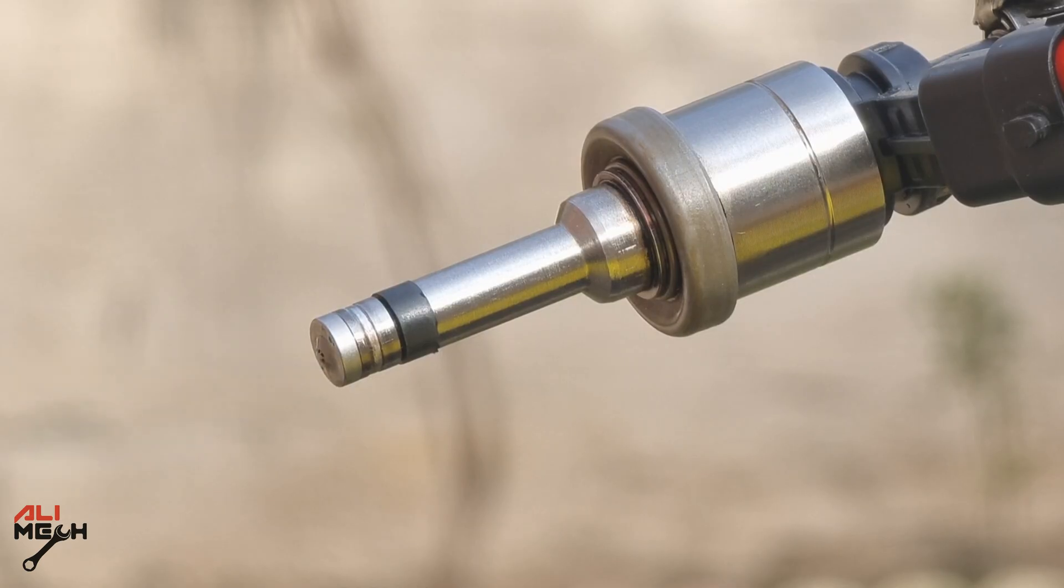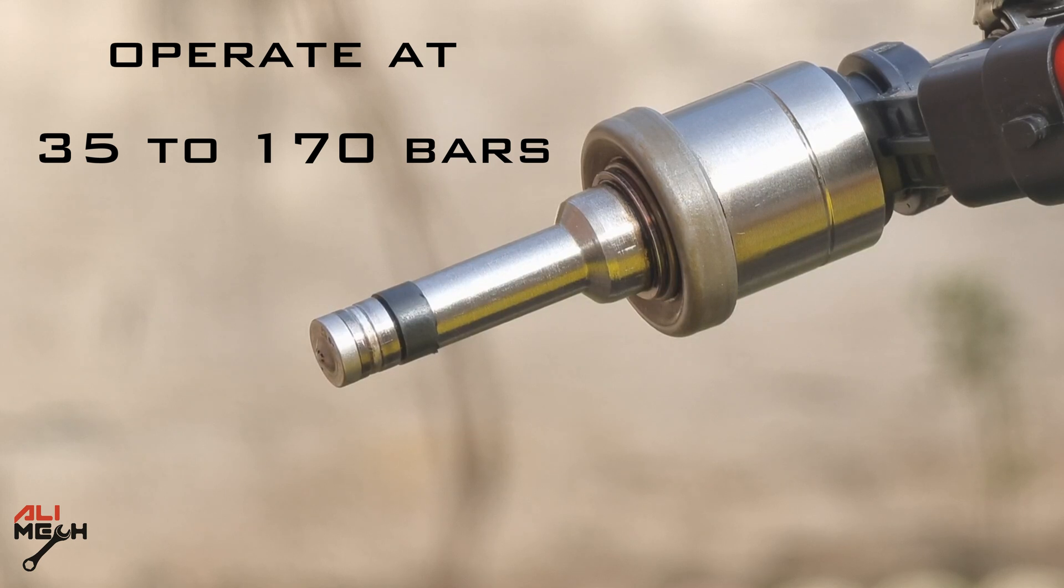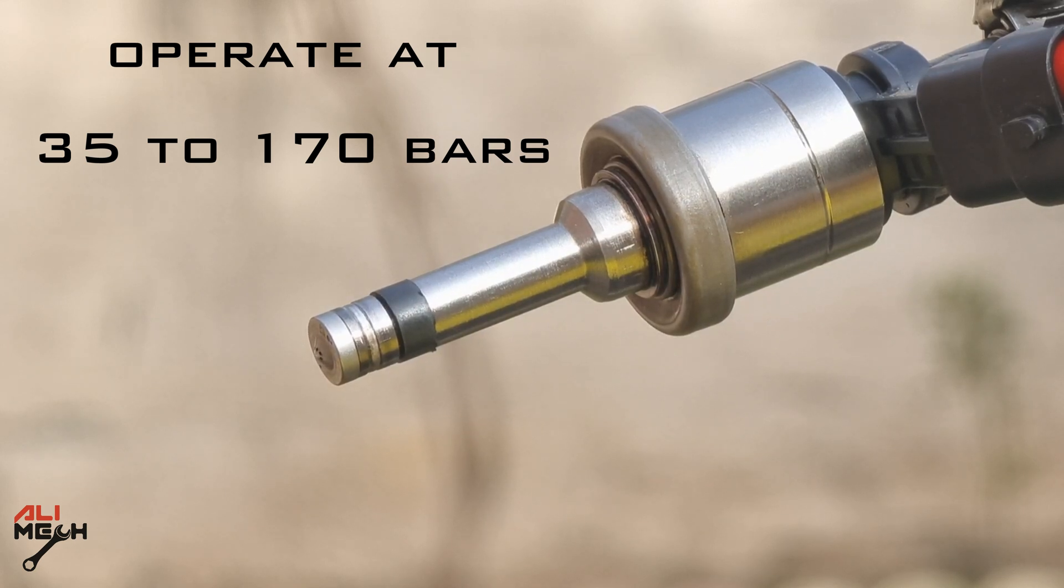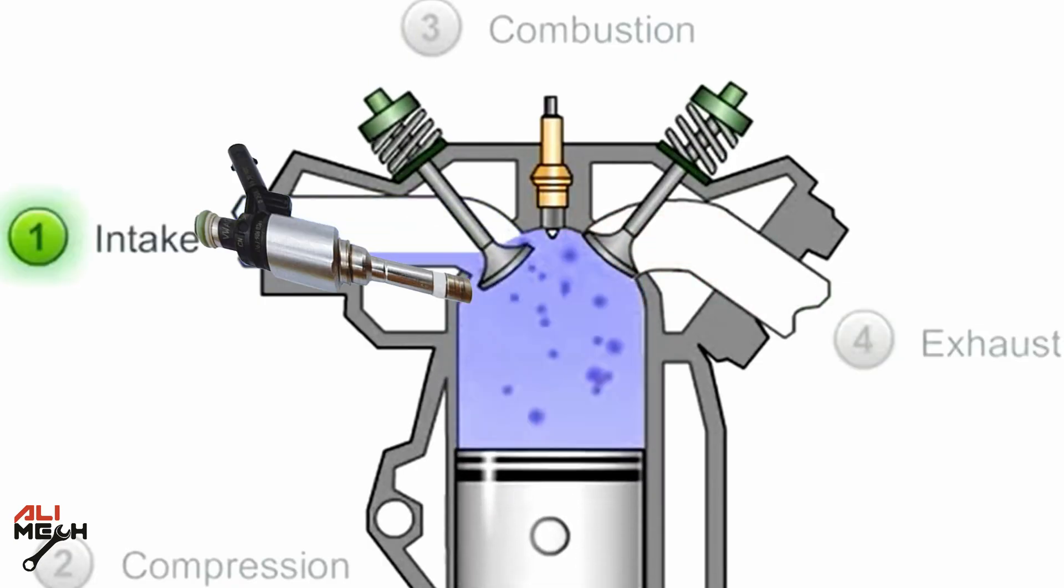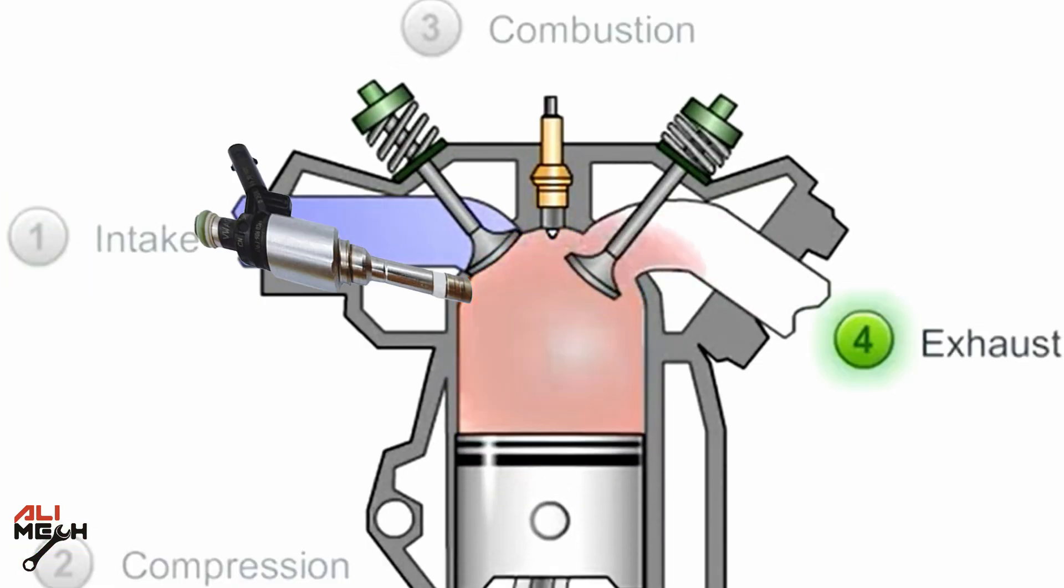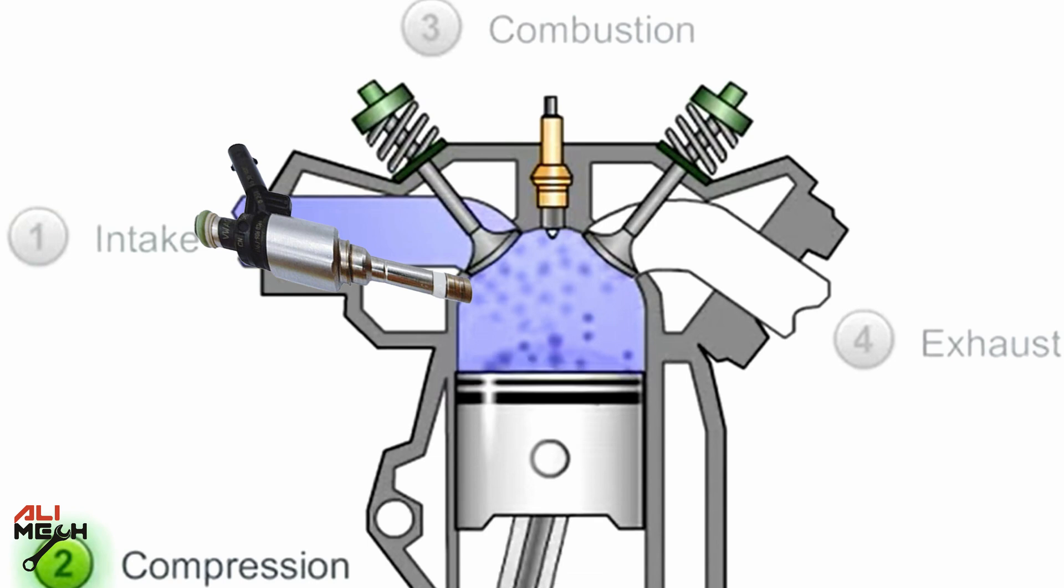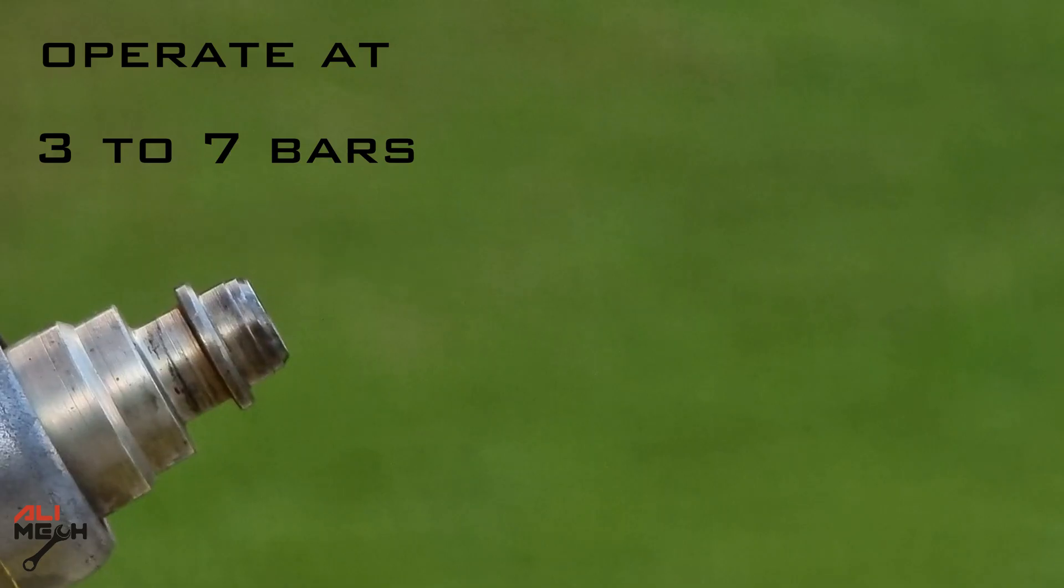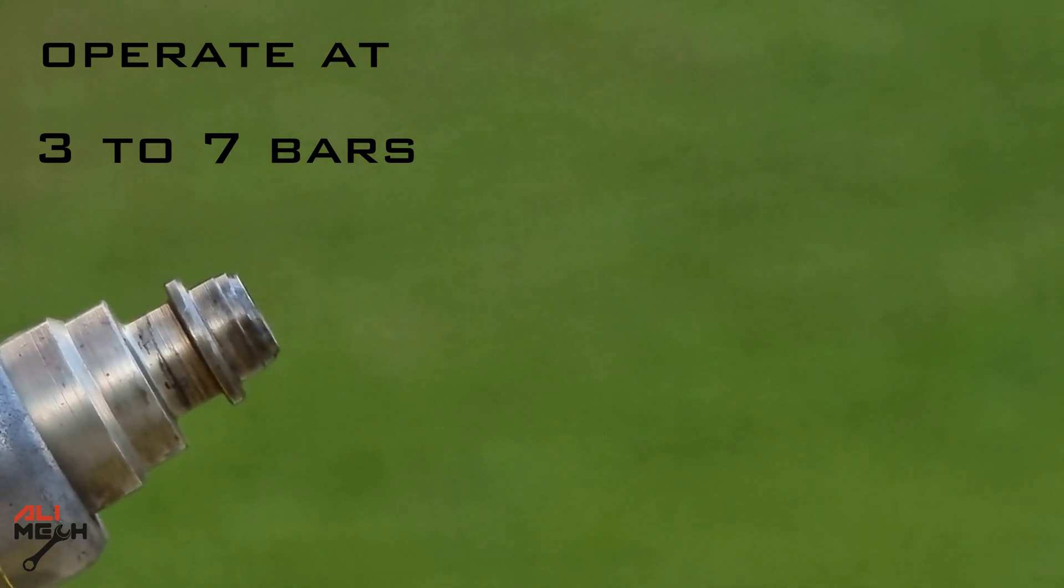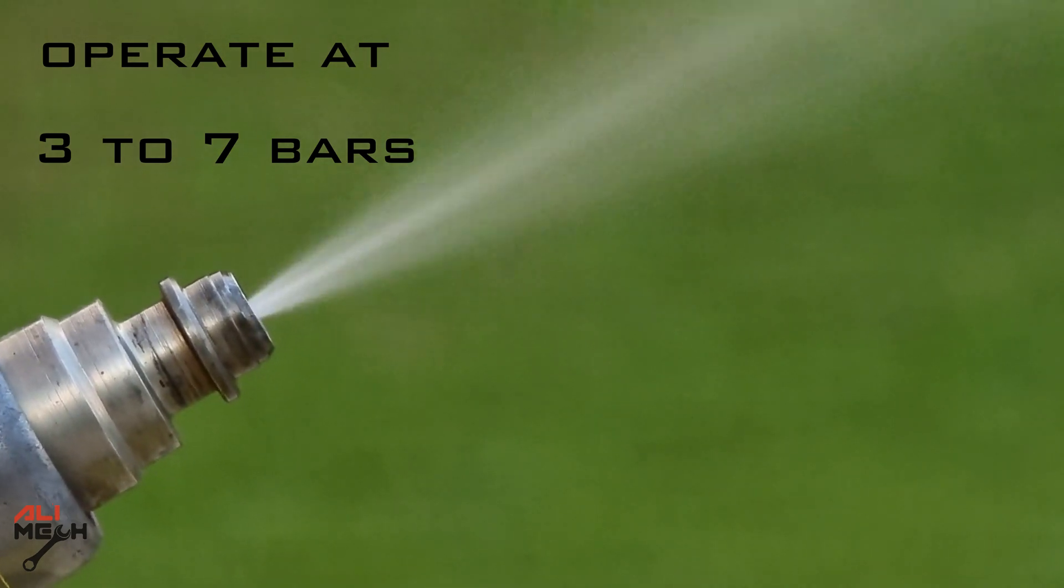Direct fuel injectors operate at much higher pressure than indirect fuel injectors to ensure precise fuel delivery. Direct fuel injector systems can operate at pressures ranging from 35 to 170 bars. The reason direct fuel injectors have higher pressure is to overcome cylinder pressure while air is being compressed. Indirect fuel injectors typically operate at pressure between 3 to 7 bars.